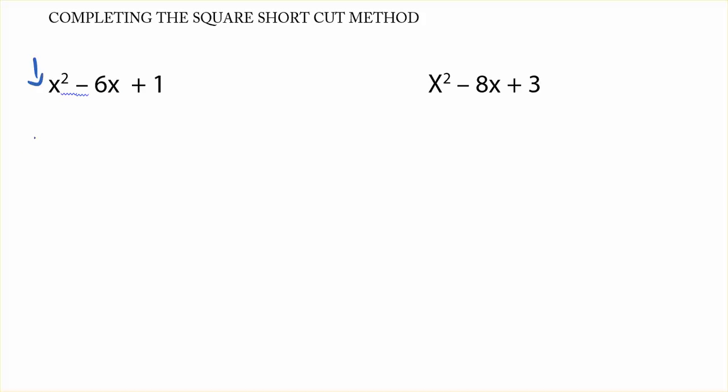Now, we know that the coefficient of the x squared term is 1, so we can go straight ahead and look at the square. My first step is to put a bracket, I'll put an x in the bracket, and I want to, in the bracket, for the number term, I want to take half of this. So I want to halve the coefficient of the x term. Half, which gives me negative 3. Half negative 6 is negative 3.